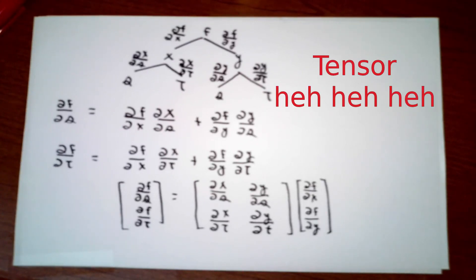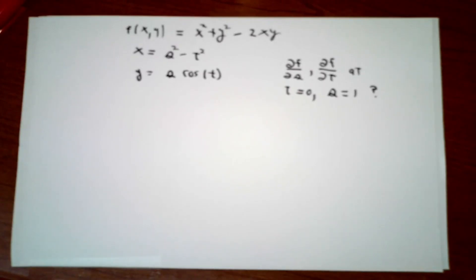You can look at more complicated situations, but we don't want to become any tensor than we need to at this stage of the game. As an example of this sort of thing, suppose that f of x and y was x squared plus y squared minus 2xy. x is s squared minus t squared and y is s times cosine t.